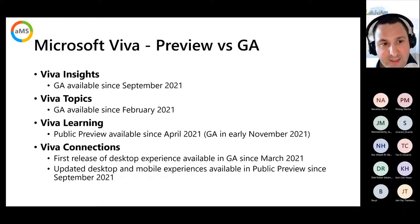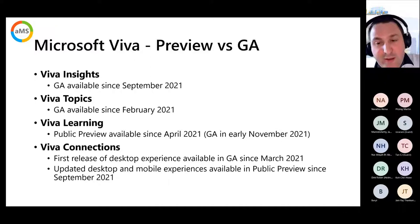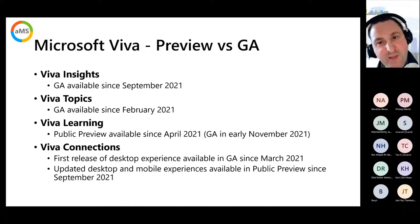A few words about preview and GA status: Viva Insights is in GA since September, Viva Topics in GA since February. Viva Learning is in public preview since April, with GA planned for November 2021. Viva Connections had its first desktop experience GA in March, and in September we got the updated desktop and mobile experience in public preview — GA is planned for around the end of the year.